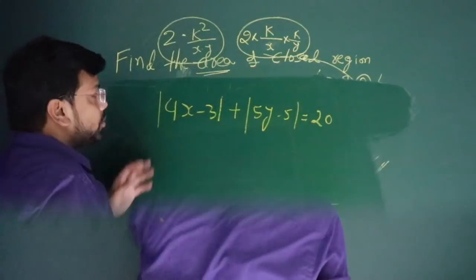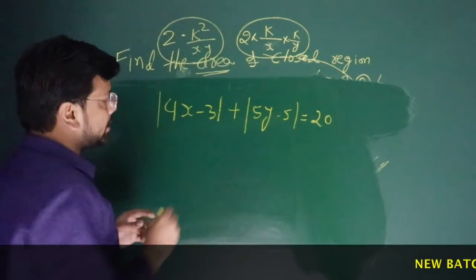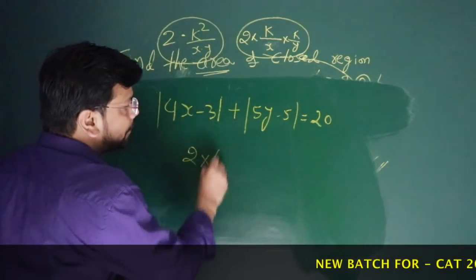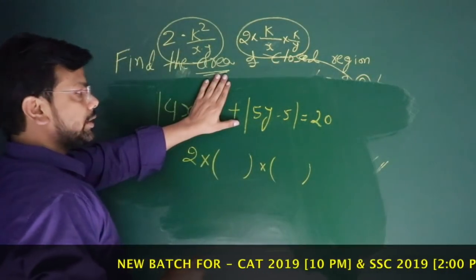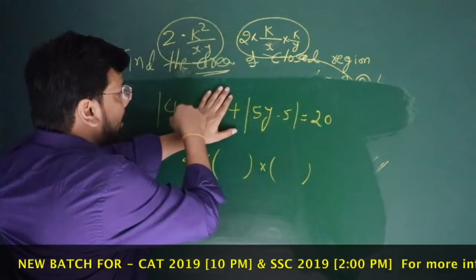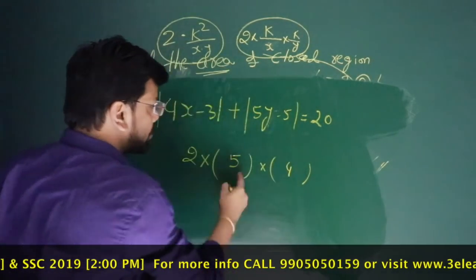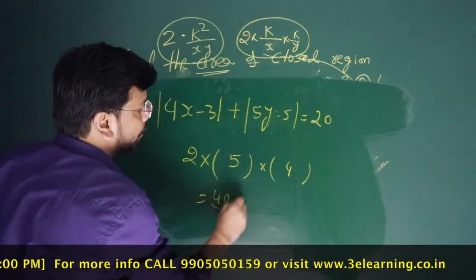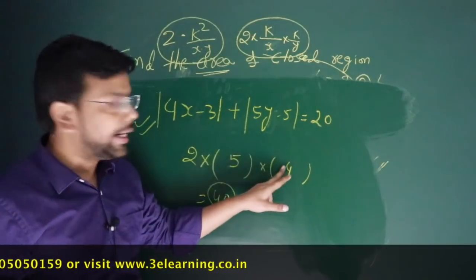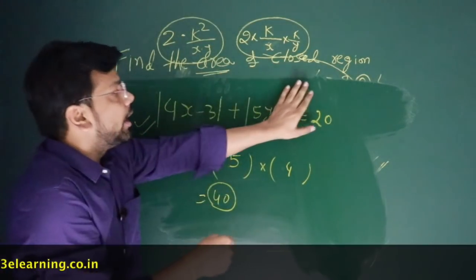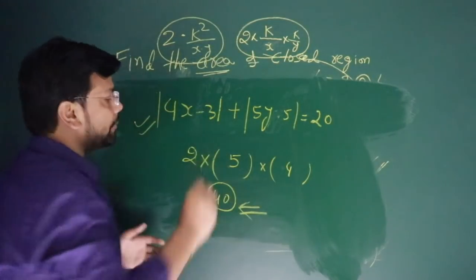Let me note a question for you. The question is |4x-3| + |5y-5| = 20. What is the area of the closed region? Area is 2 times the product of diagonals. No use of the constant. 4x = 20, so x = 5. 5y = 20, so y = 4. Area is 2 × 5 × 4 = 40 square units.